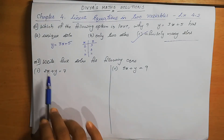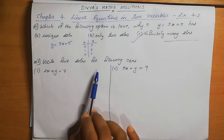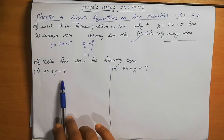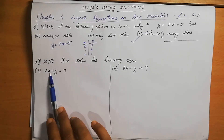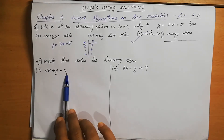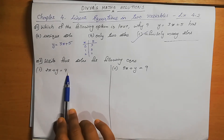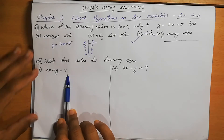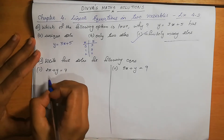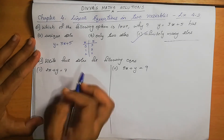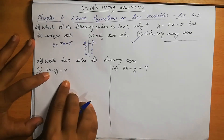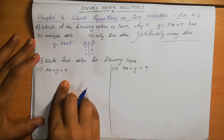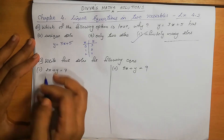Question number 2: Write four solutions for each of the following equations. First: 2x plus y equal to 7. We need to write four solutions for this equation — we substitute values of x and get the corresponding values of y. Any value can be substituted.